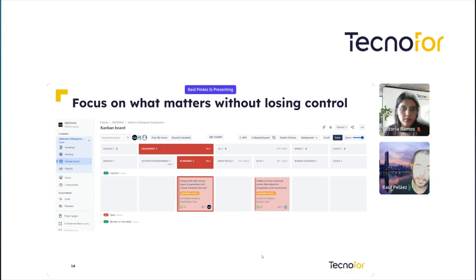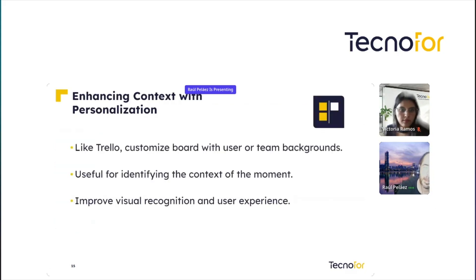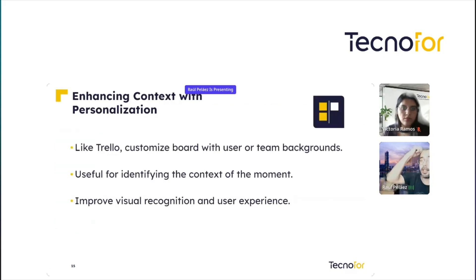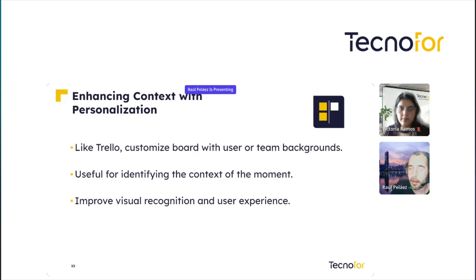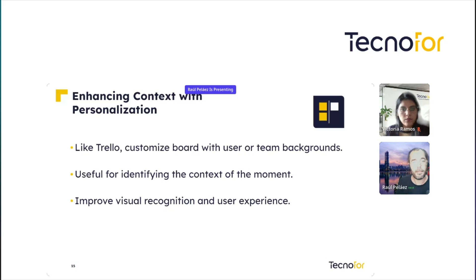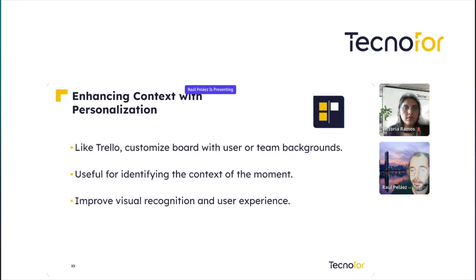In the same context, with personalization — like in Trello — you can customize boards with user or team backgrounds, and then you can differentiate between boards. Imagine you have a board for Team A and another for Team B. You can apply a special background for each team. It's useful for identifying the context at a glance and it improves visual recognition and user experience.